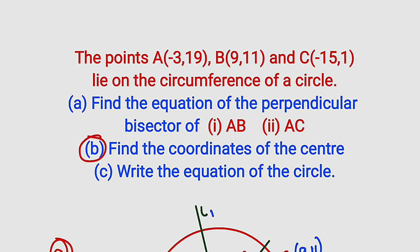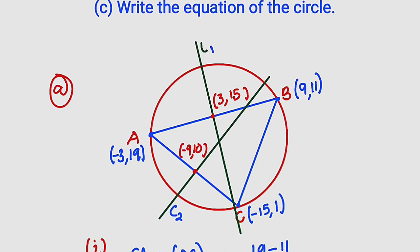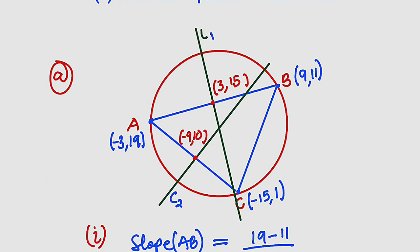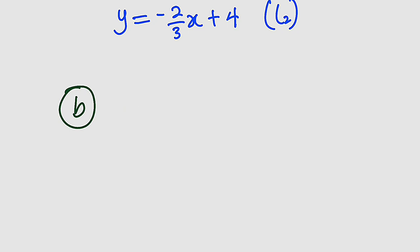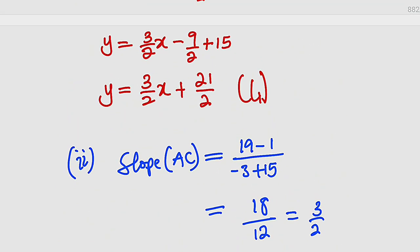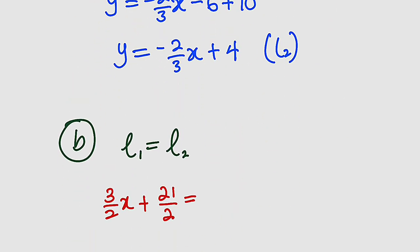Moving on to part B, we are asked to find the coordinates of the center. These two perpendicular bisectors L1 and L2 will intersect exactly at the center — this is from the circle theorem. To obtain the center, we take the two equations and set them equal to find the corresponding values of x and y.